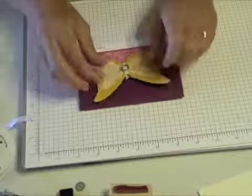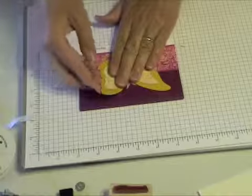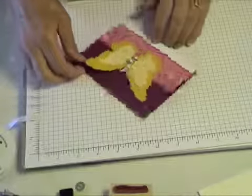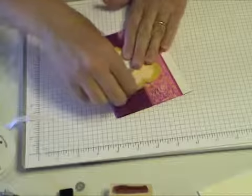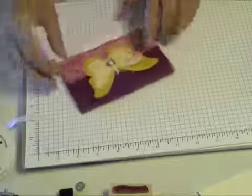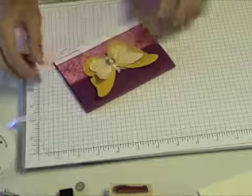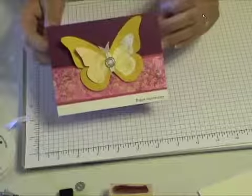And then I'm going to kind of bend the wings up a little bit starting with the outer one and then the inner one. There you go.